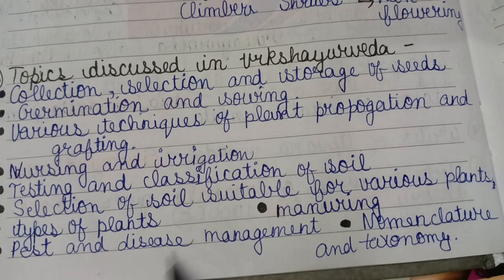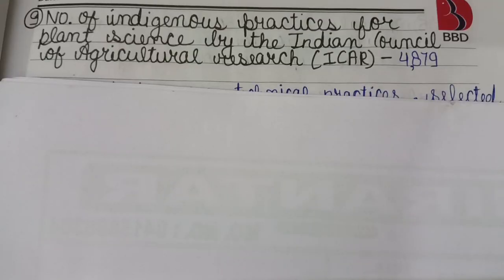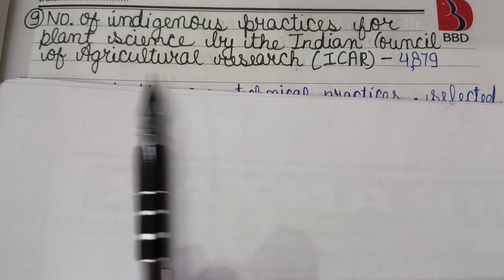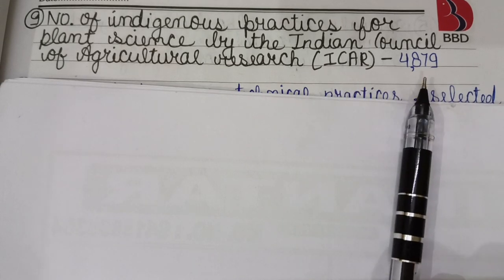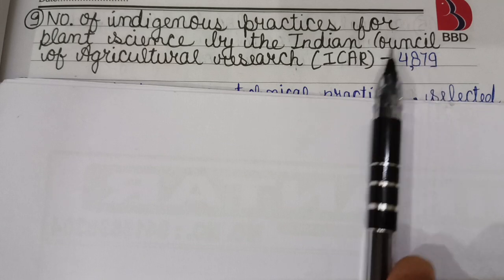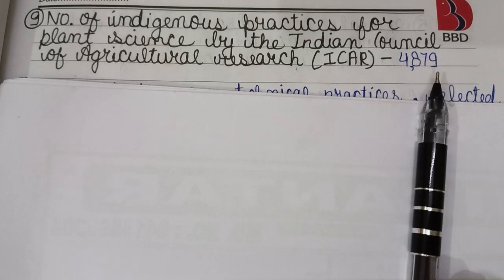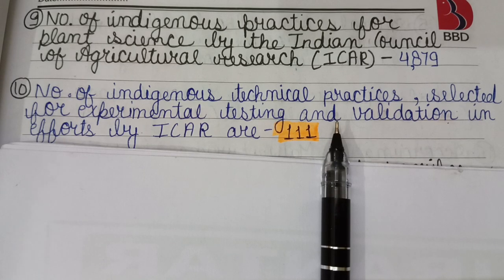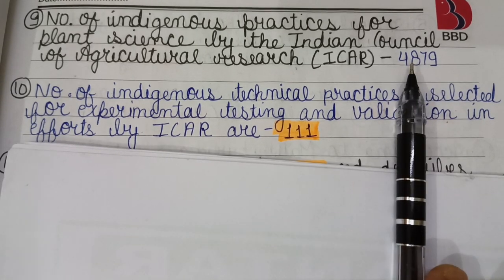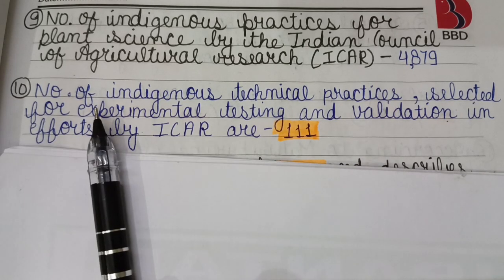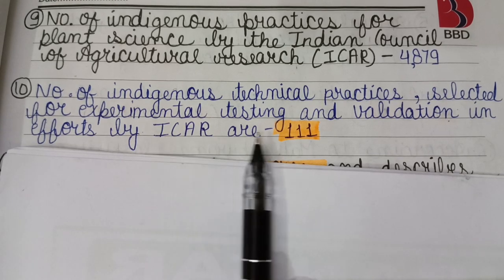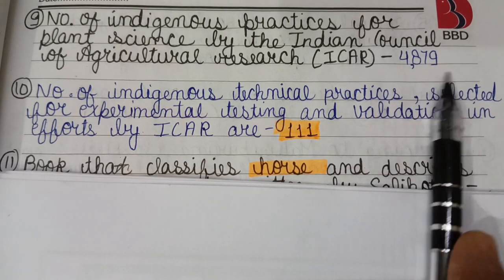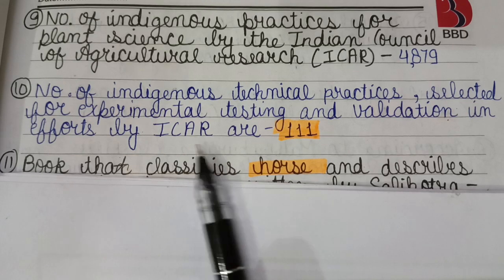The number of indigenous practices for plant science documented by the Indian Council of Agriculture Research (ICAR) is approximately 4,879. Of these, 111 indigenous technical practices were selected for experimental testing and validation by ICAR.